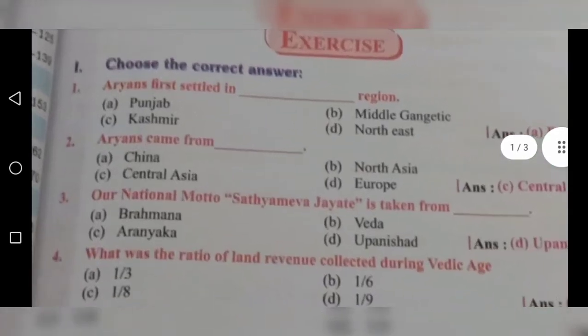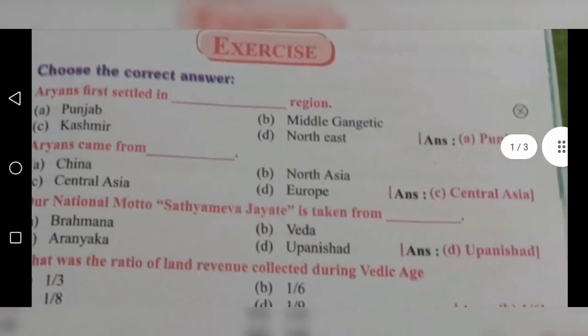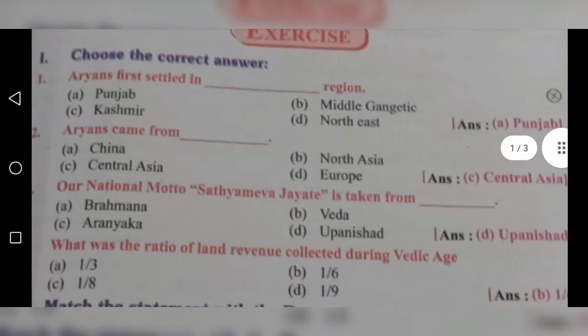Second question: Aryans came from where? There are 4 options given. Among these, option C is the correct answer. Aryans came from Central Asia.